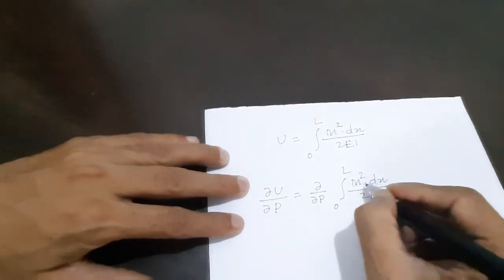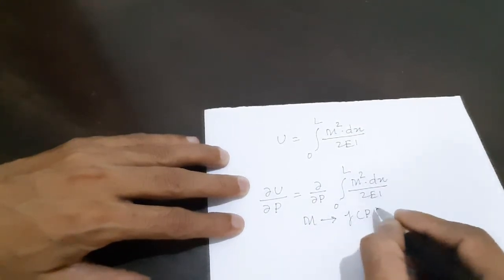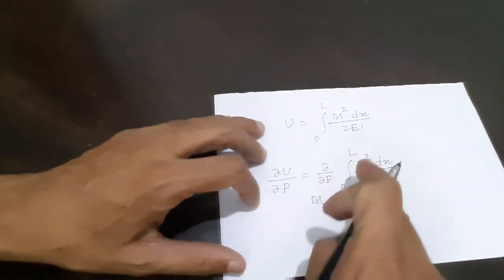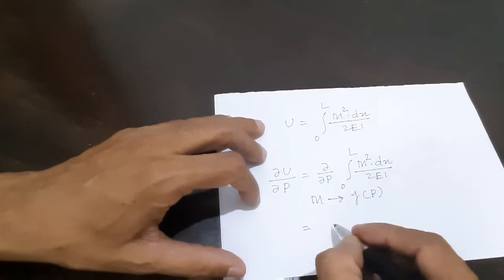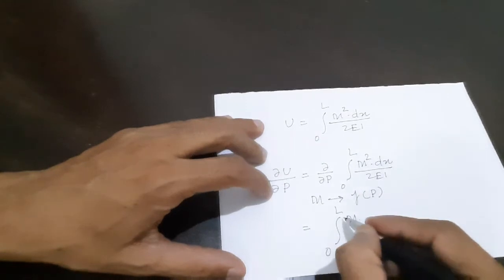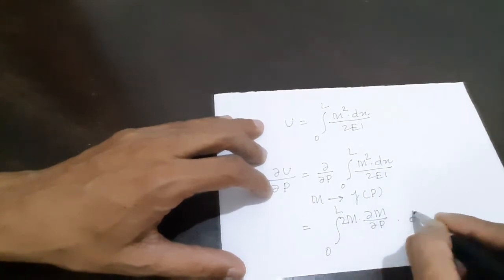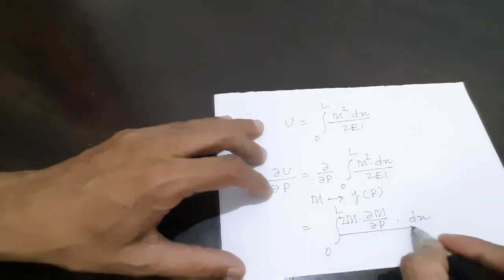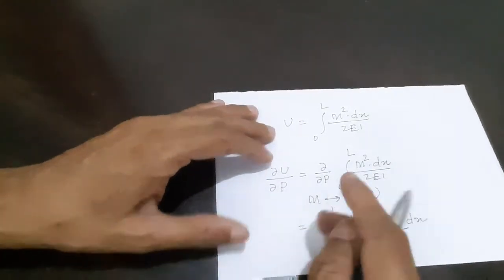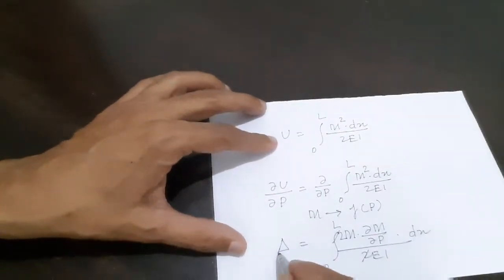Now, M is a function of P. M will contain some terms of force because bending moment takes place due to force. So this equation becomes the integral from 0 to L of 2M times del M by del P dx divided by 2EI. These twos will get cancelled, and the left hand side — partial derivative of strain energy — is equal to deflection. So this is nothing but deflection.